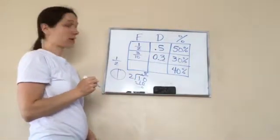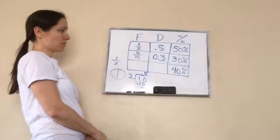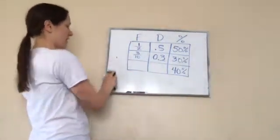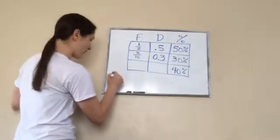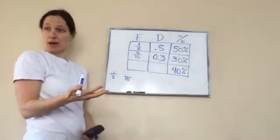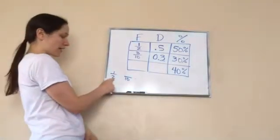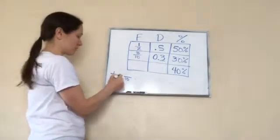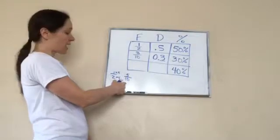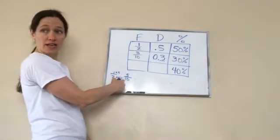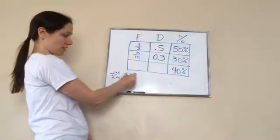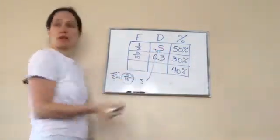Or you can do it another way. Since it's one half, if we want it to be a ten right there, then I can make it a tenths, right? So how do they get from two to ten? Times five, times five. So now that's five tenths, and five tenths as a decimal becomes what? Five tenths. Oh, point five, point five. So that's another way you can figure it out.